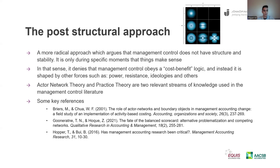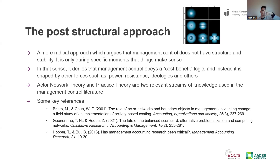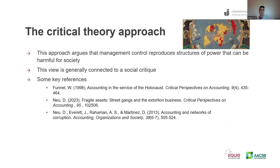Two theories that are very popular in management control within the post-structural approach are actor network theory and practice theory. Both assume this idea that structure doesn't exist — it's always moving, always somewhat subjective and relative — but that with management control you can achieve certain relative control and balance at some point in time. Philosopher Bruno Latour from France argues that organizations are not like islands, which are stable and fixed. They are more like clouds — they appear and disappear, forming different constellations depending on changing conditions.